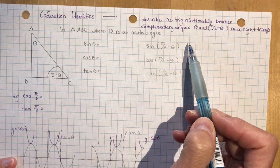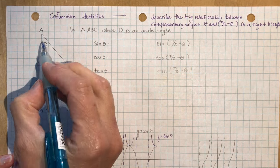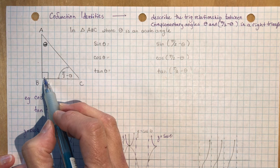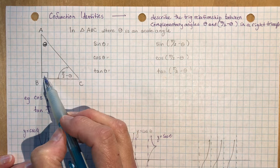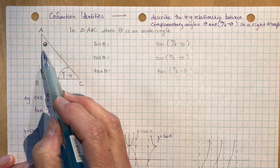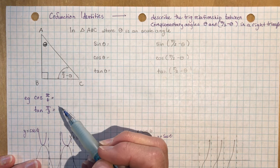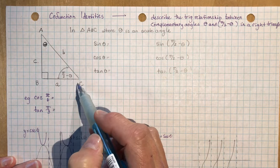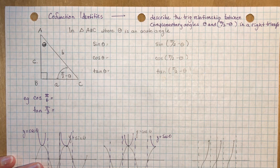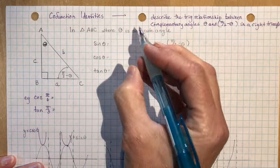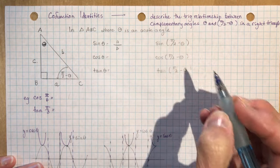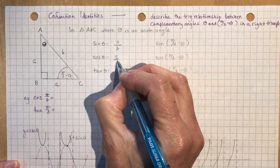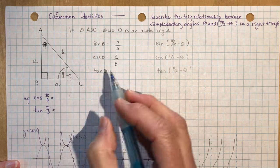Complementary — let's take a look at this triangle. If I call this angle up here theta, and this is 90 degrees, then this has to be pi over two minus theta. So if this was 30, this is 60; if this was 45, this is 45; if this was 20, this is 70. We're going to label our triangle properly by giving the side lengths lowercase letters opposite the angles. So the sine of theta is opposite over hypotenuse — a over b. The cos of theta is adjacent over hypotenuse — c over b. And the tan of theta is opposite over adjacent — a over c.